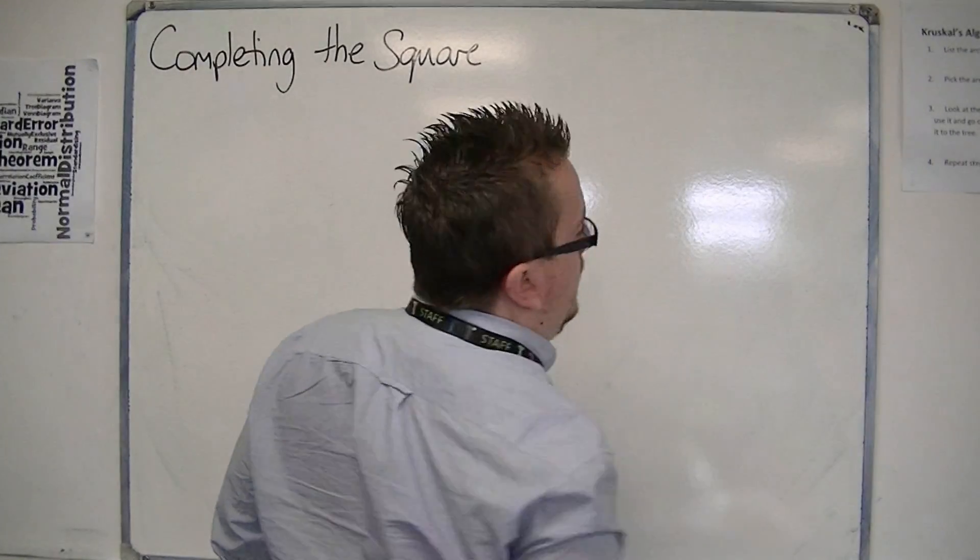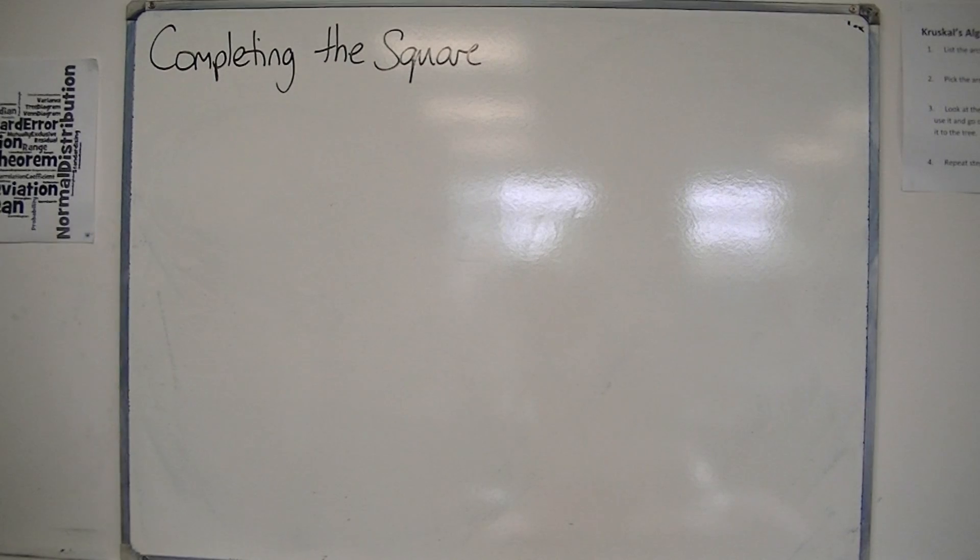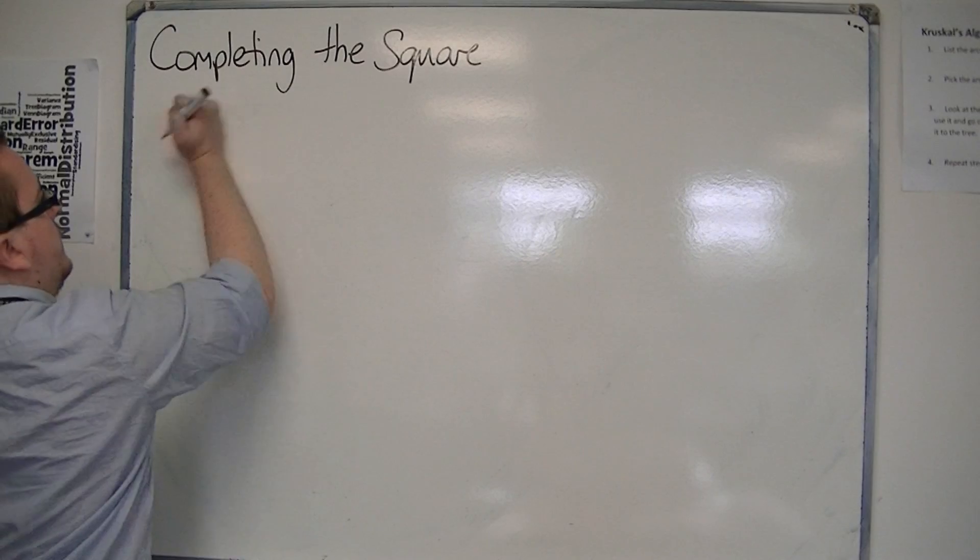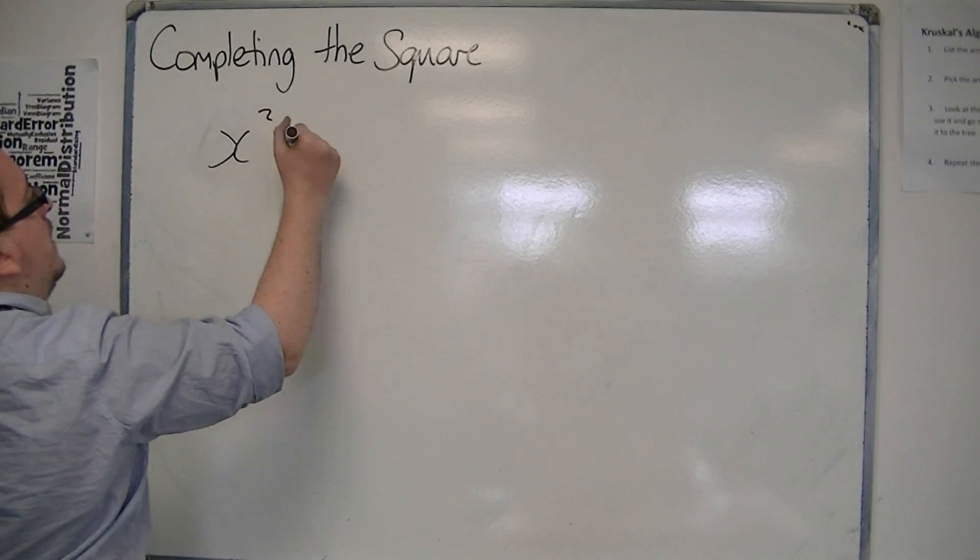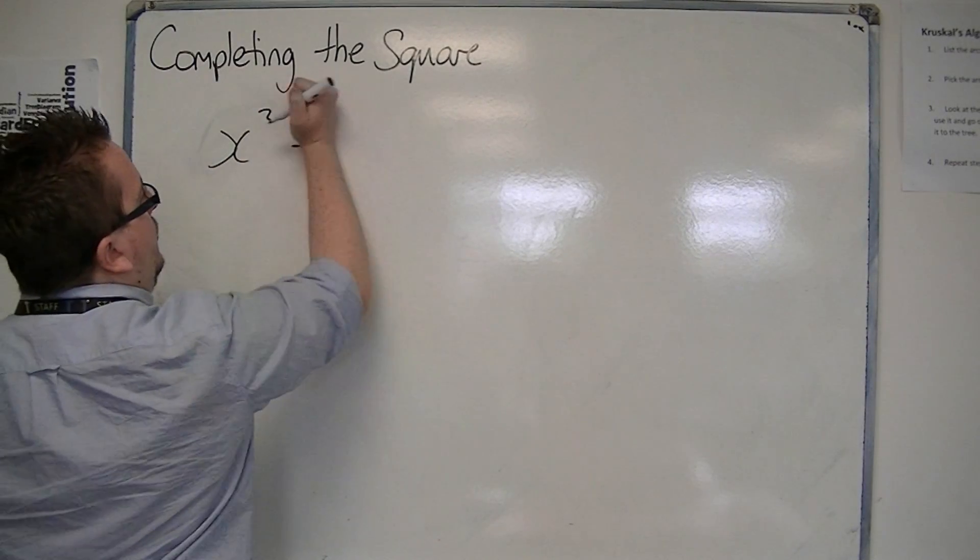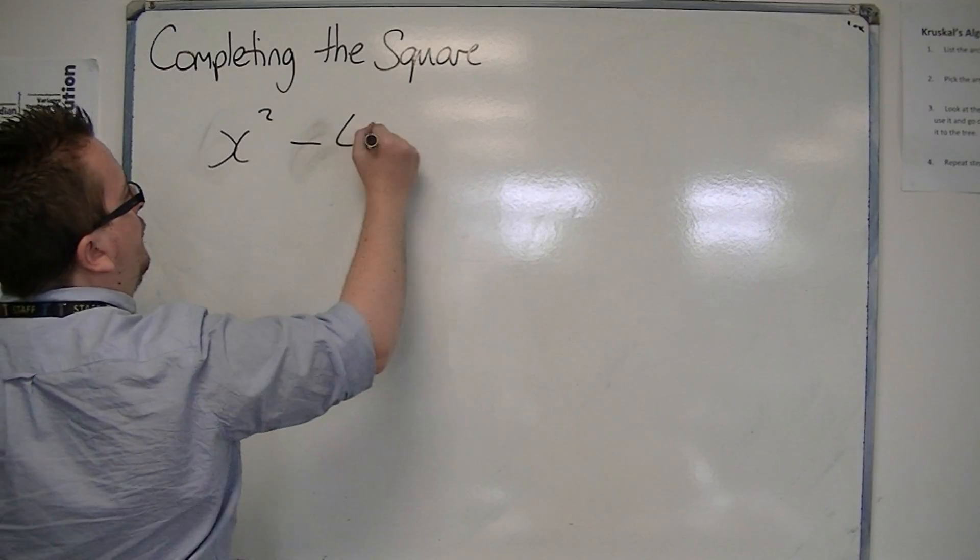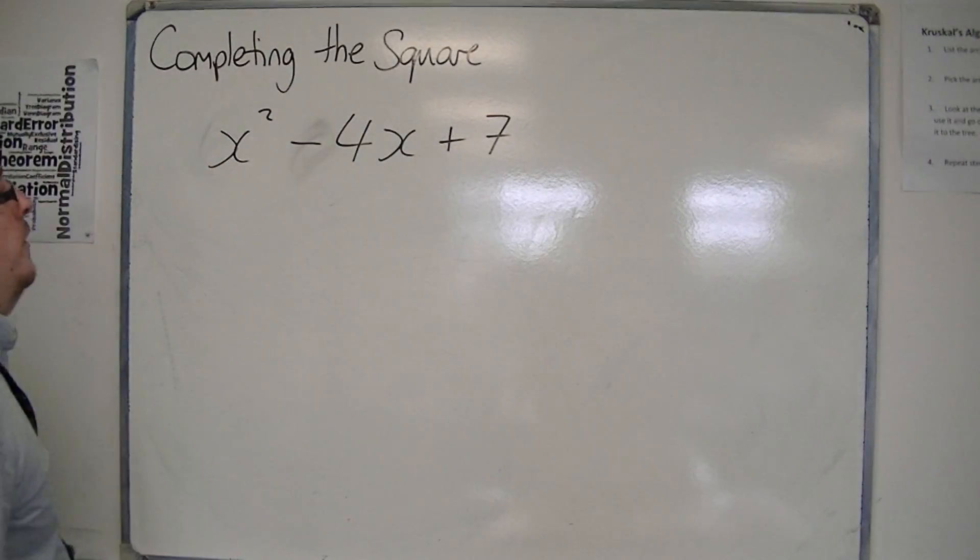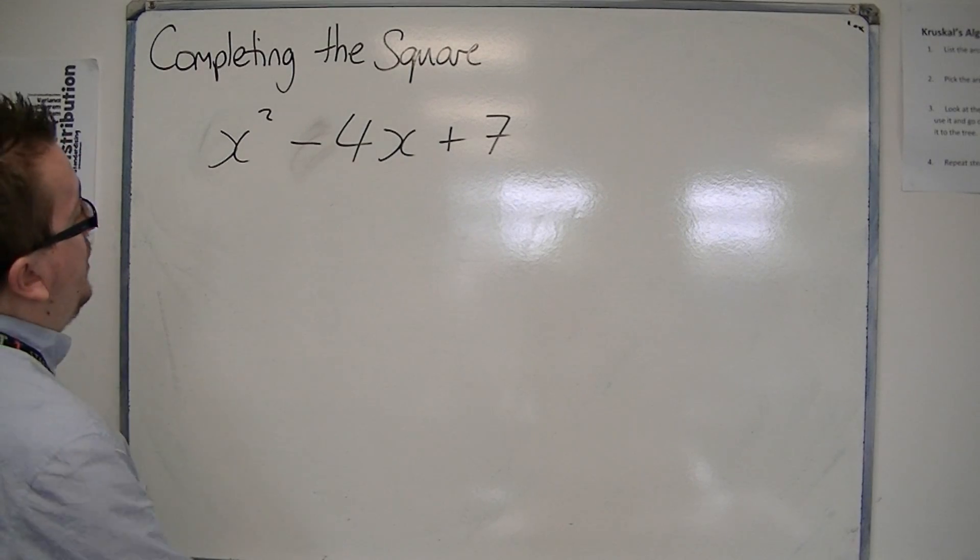Let's say we've got x² - 4x + 7. So this is the nice, quick way of doing it.